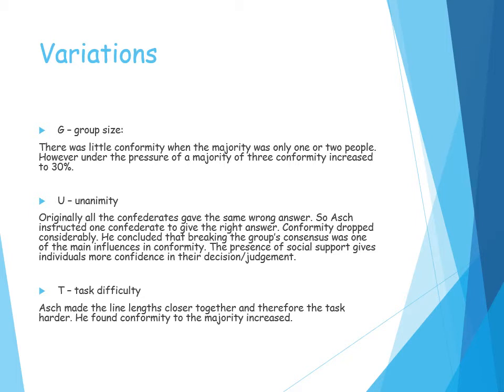Unanimity of the group: when all the confederates gave the wrong answer, conformity rates were high. However, when the group wasn't unanimous in their decision, conformity rates dropped. When someone — a confederate — also gave the correct answer, the naive participant would also give the correct answer. Social support gives individuals more confidence in their decision. Interestingly, if a confederate gave an incorrect answer but not the same incorrect answer as the other confederates, it still gave the naive participant the confidence to go against the majority.